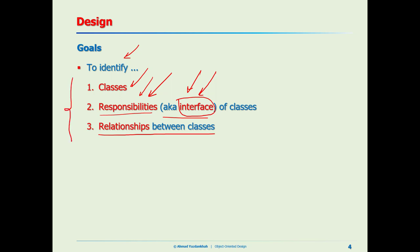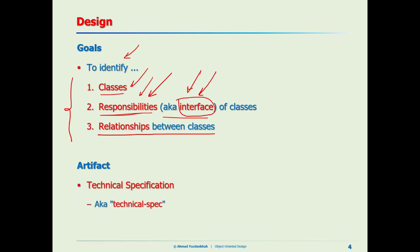Three very high-level goals for the design: finding the classes, finding the responsibilities, and finding the relationship between the classes. What is the artifact of this phase? We call it the technical spec, or technical specification.